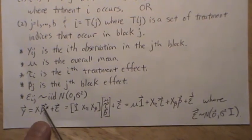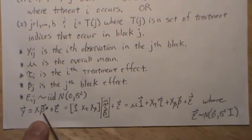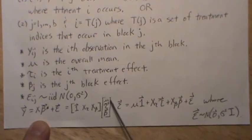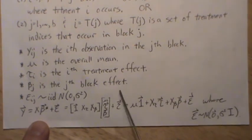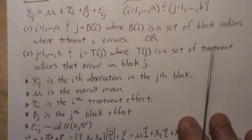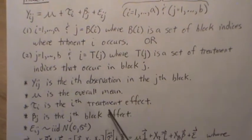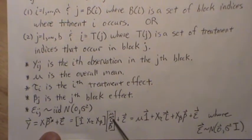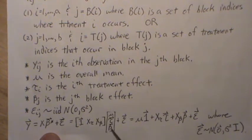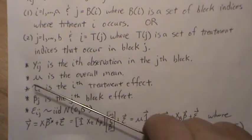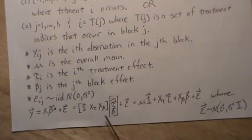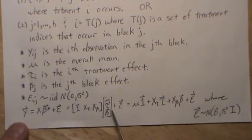It's broken up into the mu—there's a mu, a vector of tau (tau one through tau_a), a vector of beta (beta one through beta_b). When you do this multiplication, you get different column spaces associated with each: a column of ones associated with mu, X_tau, X_beta, each associated with the treatments and the blocks.